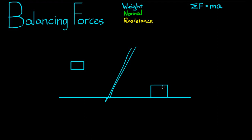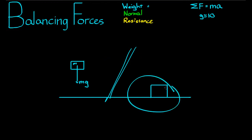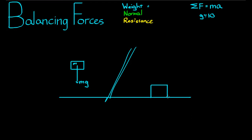Whilst the block is dropping, it has a weight force acting on it. We'll say the block has mass m, and the weight force is always equal to the mass times the gravitational constant. In physics we take g at the surface of the earth to be about 10. This object has no other forces acting on it if we ignore air resistance, and therefore it's accelerating downwards. However, after it's come to a complete stop on that surface, it's no longer accelerating — the acceleration here is about 10 m/s², and here it's equal to zero.